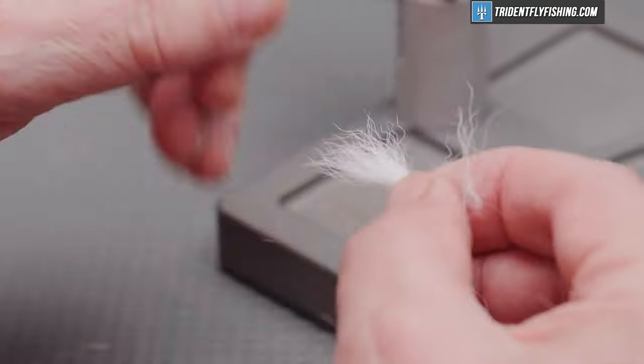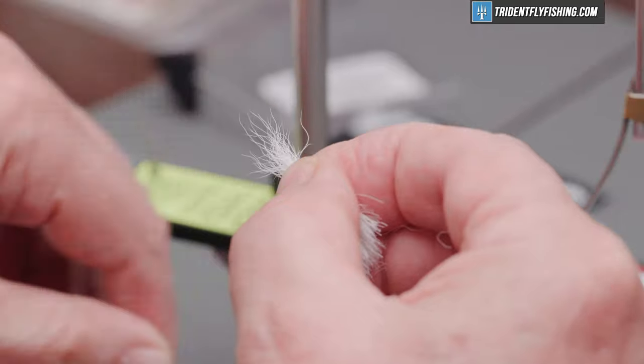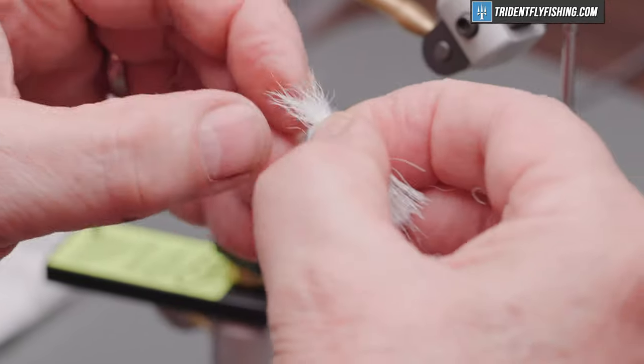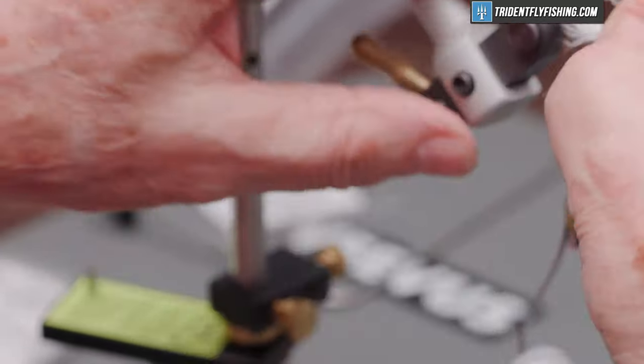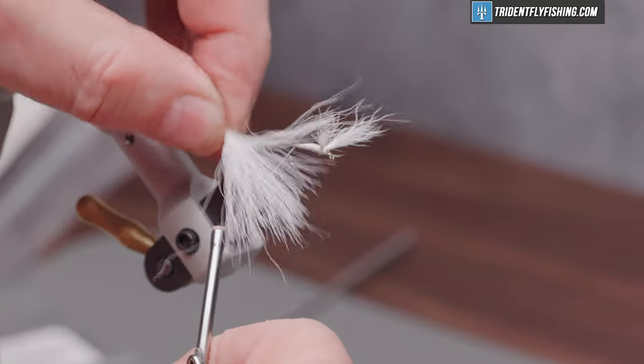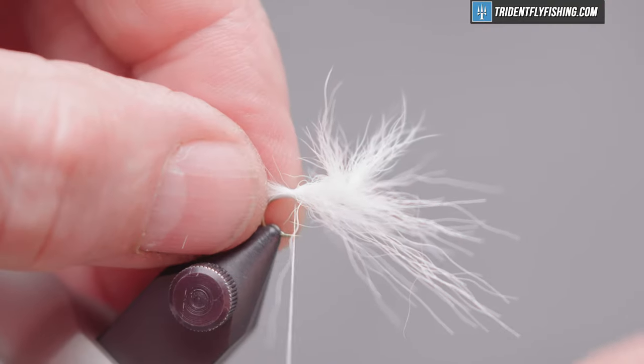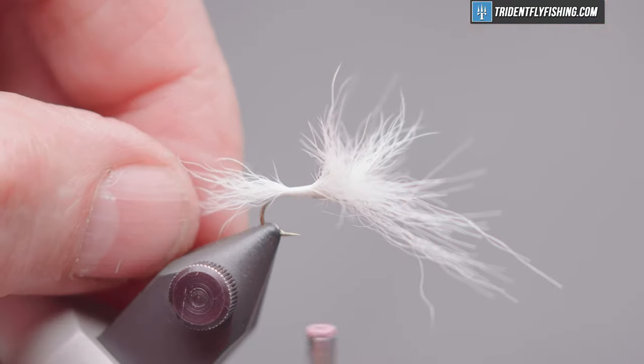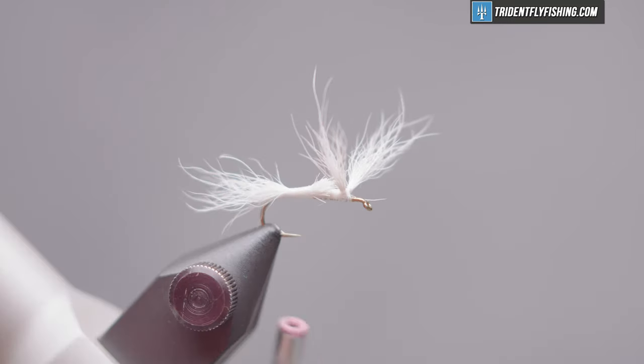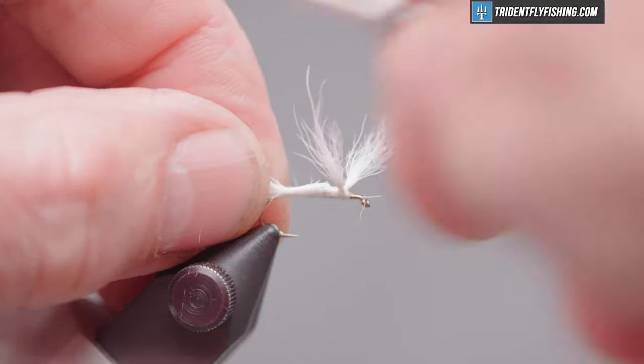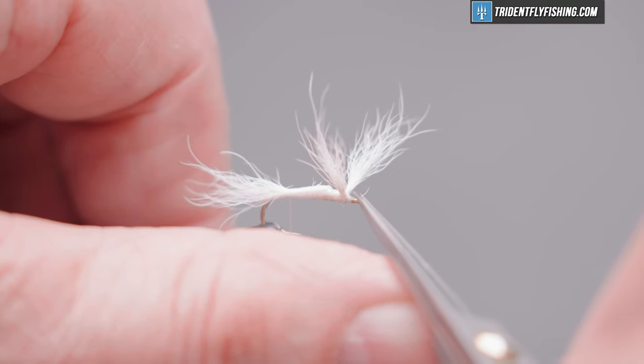Cut the material off. And pull out all of the short fuzzy material. We want the tail to be about the hook shank in length. Maybe just a little less. About like so. And we'll tie that in on top of the hook. How that looks. Looks about right. Get rid of our excess material here. One little hair there is bothering me. Got to get rid of that. There we go.